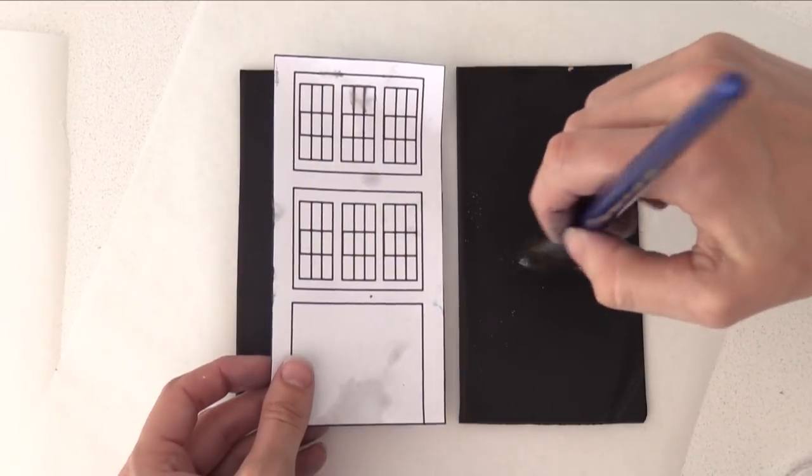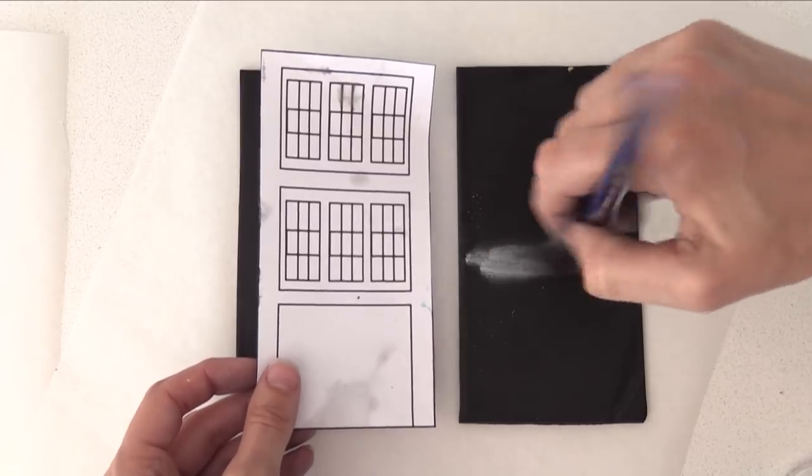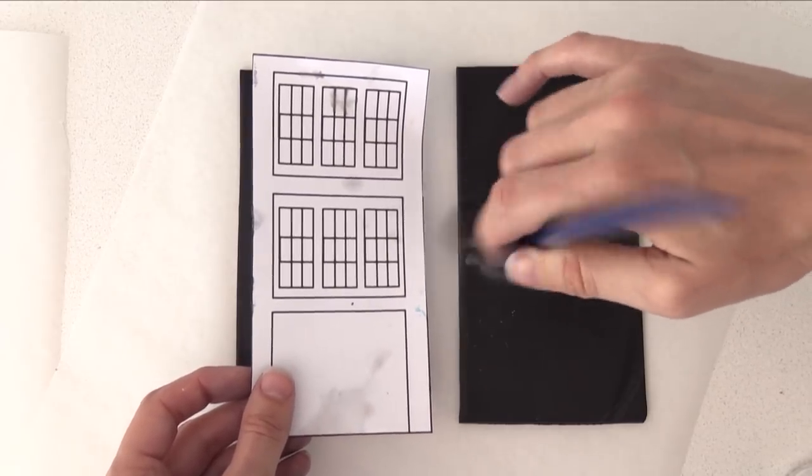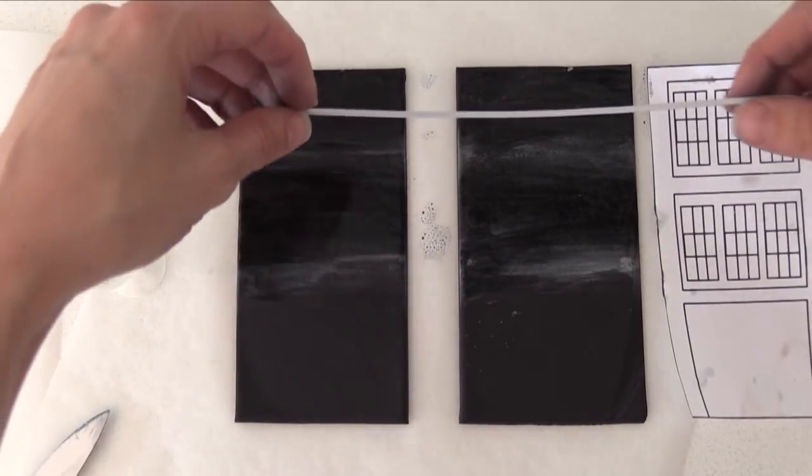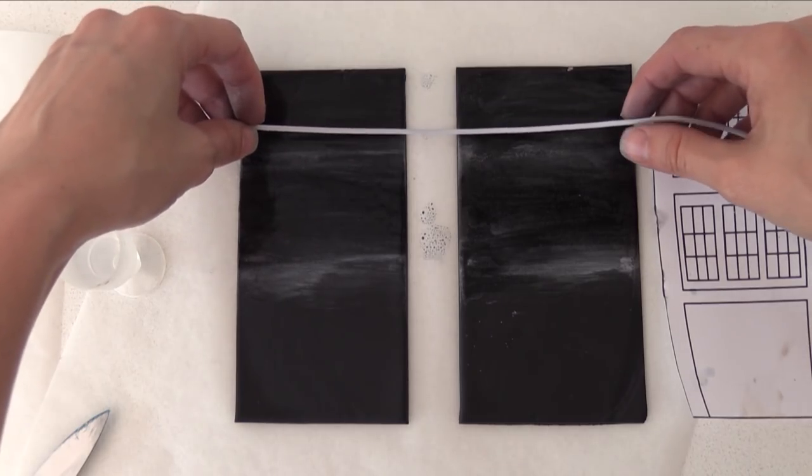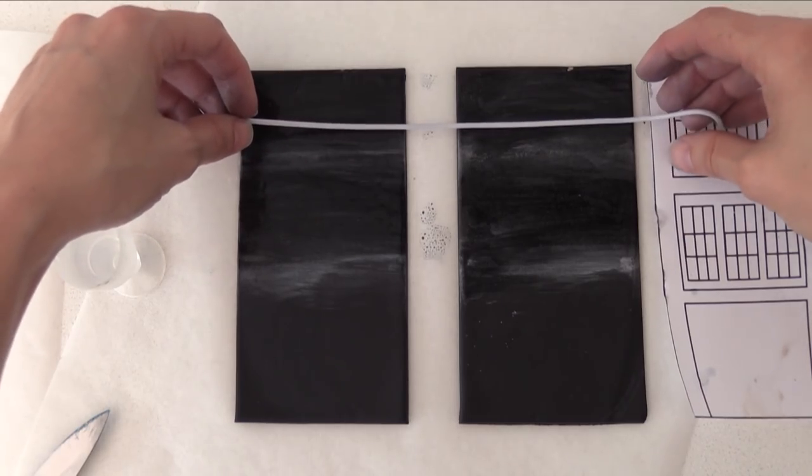Now for the prison. Cut out some black fondant and brush it with a little silver luster dust. Then rub a little water across to dampen that fondant. Roll a snake of light grey and place it across using your template as a guide for where to put those bars.